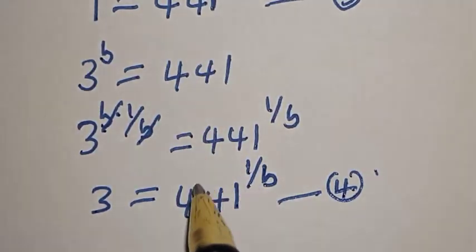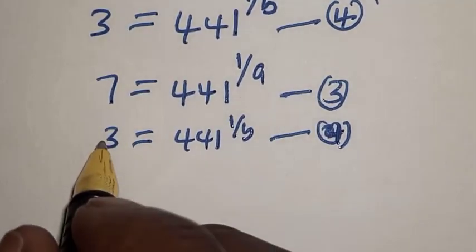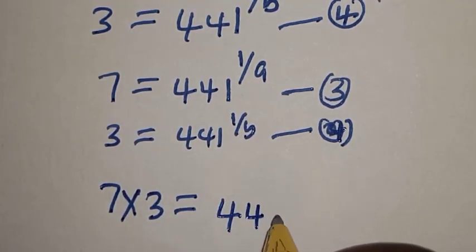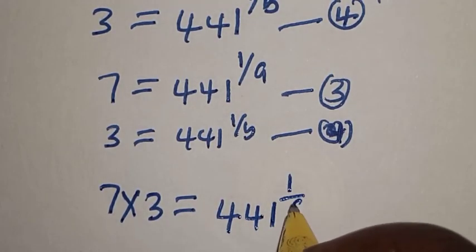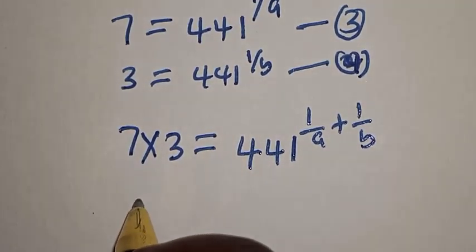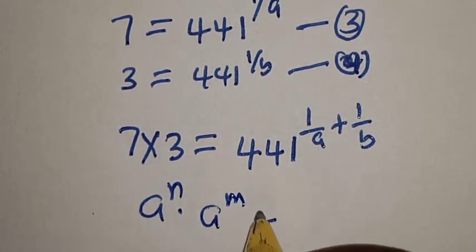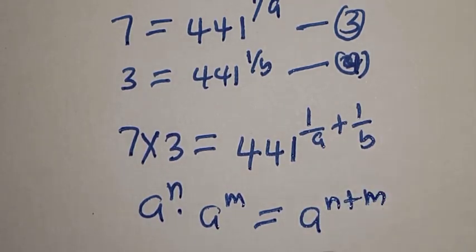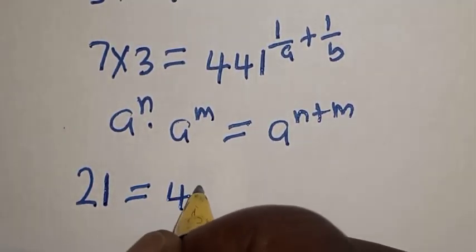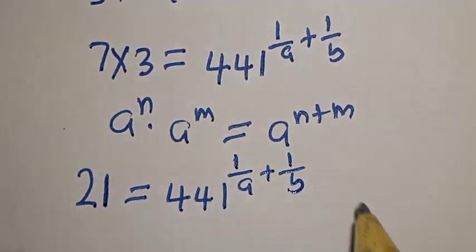Now, let's multiply equation 3 and equation 4 together. By multiplying these two equations together, we have 7 multiplied by 3 is equal to 441 raised to power 1 over a plus 1 over b. Remember the rule: a raised to power n multiplied by a raised to power m is equal to a raised to power n plus m — they have the same base. So 7 times 3 gives us 21.